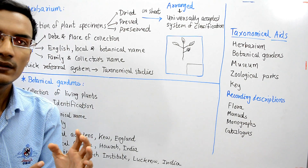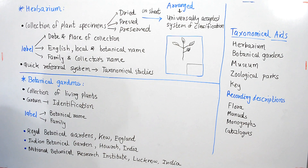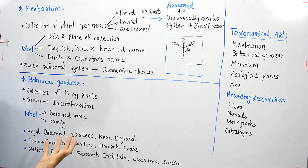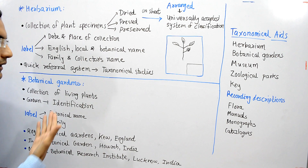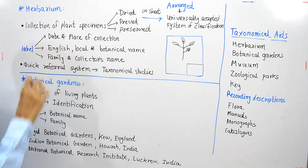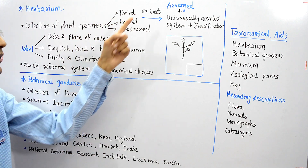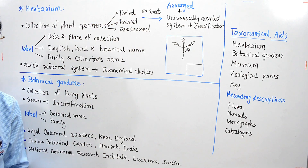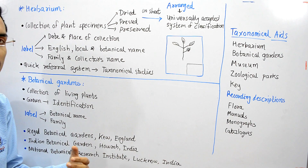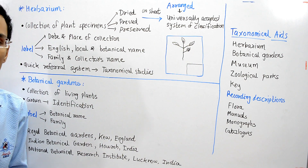I have already written the important points about these taxonomical aids. Herbarium is having collection of dead plant specimens, while botanical garden is having collection of living plants. Herbarium has a collection of plant specimens which are dried, pressed, and preserved on a sheet — this is called a herbarium sheet.